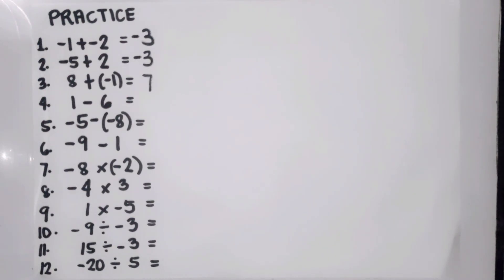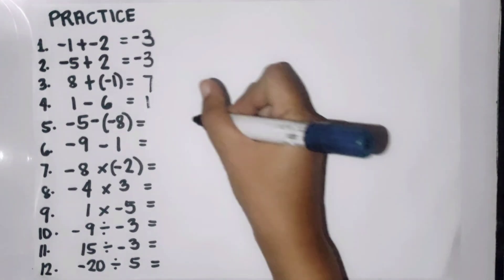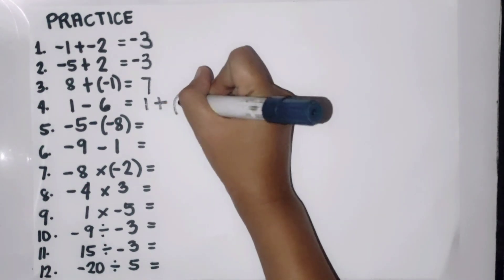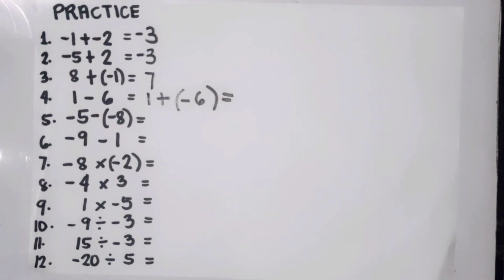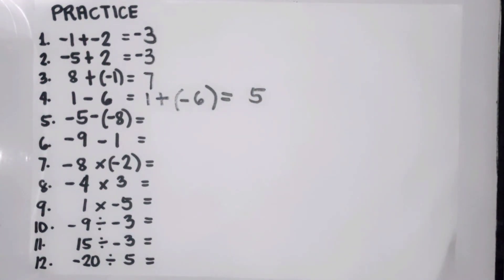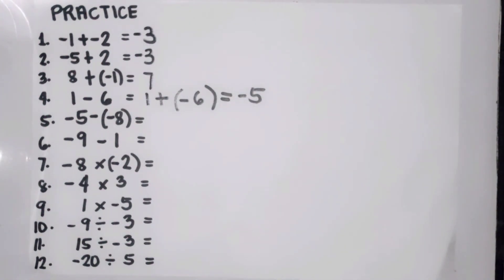Number four: one minus six. Copy the first number, proceed to addition, and change the sign of six from positive to negative. Since they now have different signs, subtract — six minus one is five — and copy the sign of six, which is negative. Therefore one minus six is negative five.